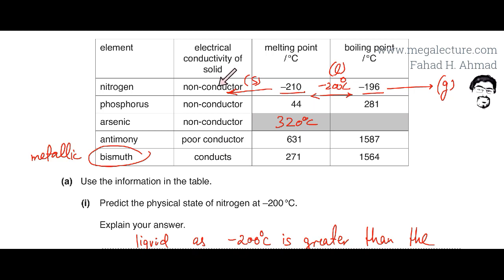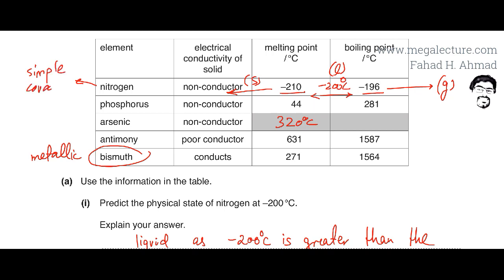Nitrogen, on the other hand, has low melting and boiling points and is a non-conductor. These properties match those of a simple covalent molecule. Simple covalent molecules have low melting and boiling points and do not conduct electricity.